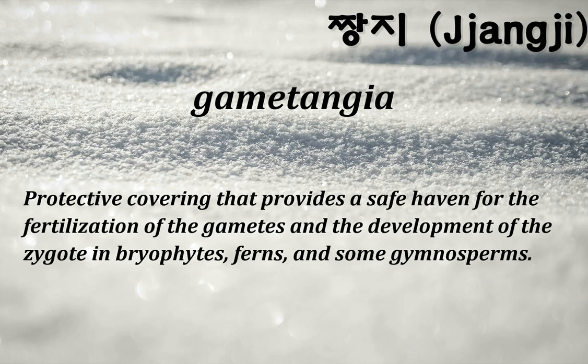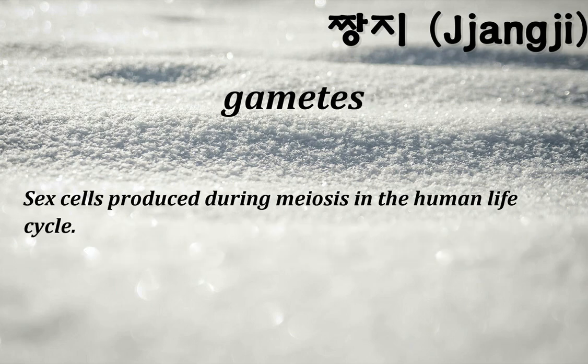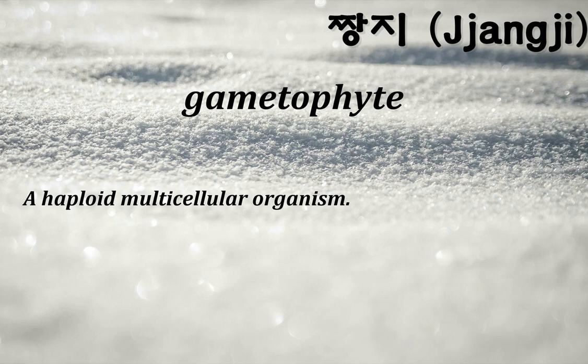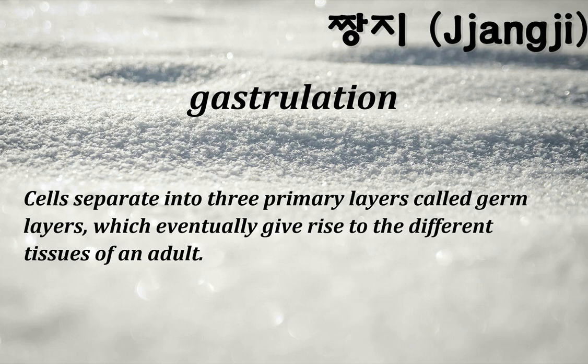Gametangia: protective covering that provides a safe haven for the fertilization of gametes and the development of the zygote in bryophytes, ferns, and some gymnosperms. Gametes: sex cells produced during meiosis in the human life cycle. Gametophyte: a haploid multicellular organism. Gastrulation: cells separate into three primary layers called germ layers, which eventually give rise to the different tissues of an adult.